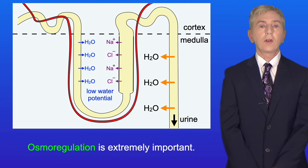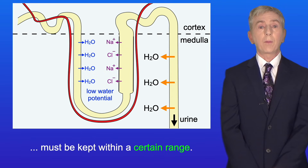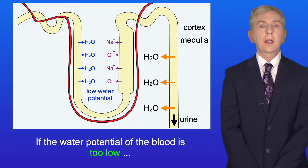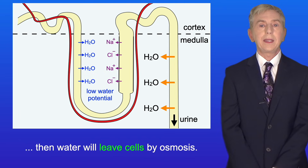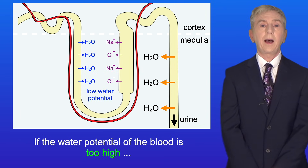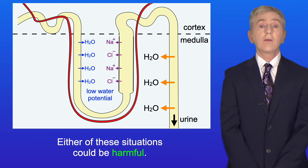Osmoregulation is extremely important because the water potential of the blood must be kept within a certain range. If the water potential of the blood is too low, then water will leave cells by osmosis. And if the water potential of the blood is too high, then water will enter the cells by osmosis. Either of these situations could be harmful.